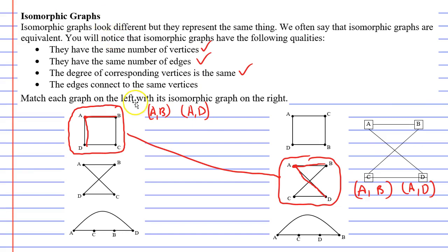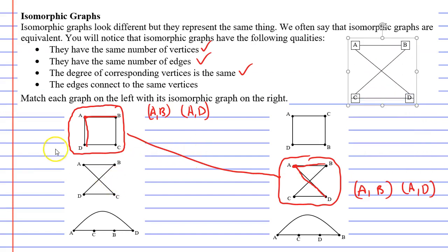So we're going to match up the last two, and we're going to do it without our special diagram this time. So the first thing is, if we look at the first three dot points, they all have ticks for all of them. They all have the same number of vertices, they all have the same number of edges, and the degree of corresponding vertices is the same. Every single vertex has a degree of two.